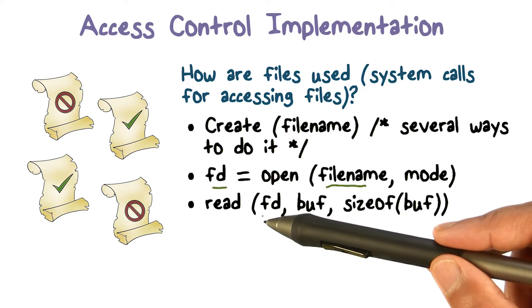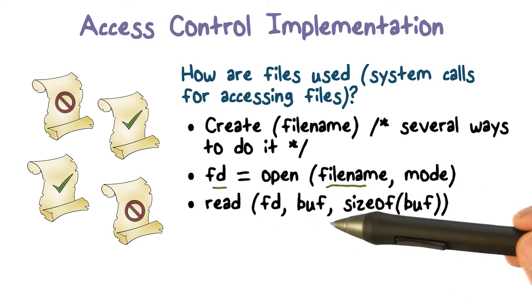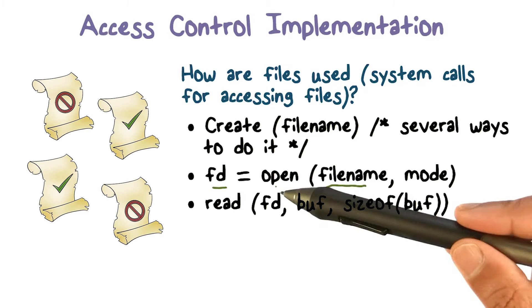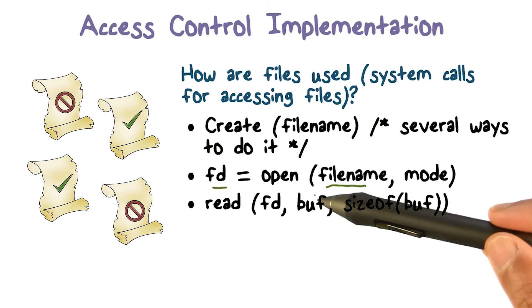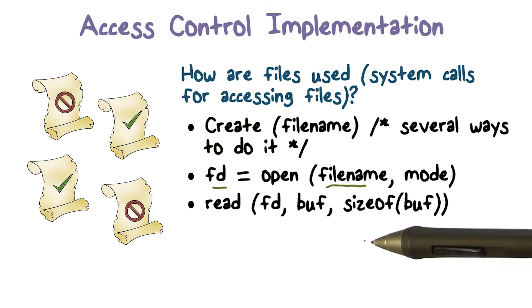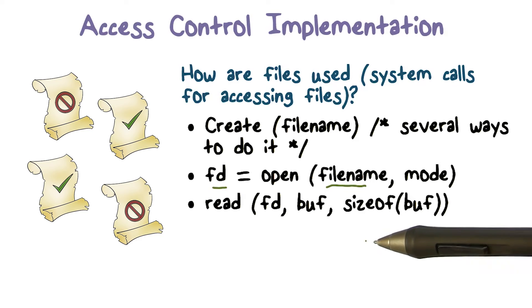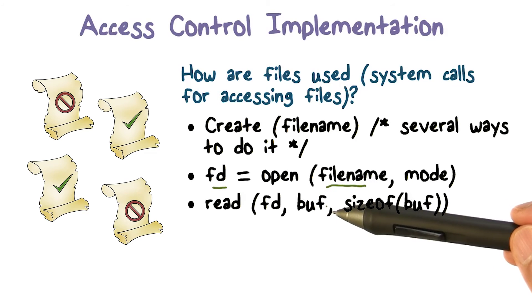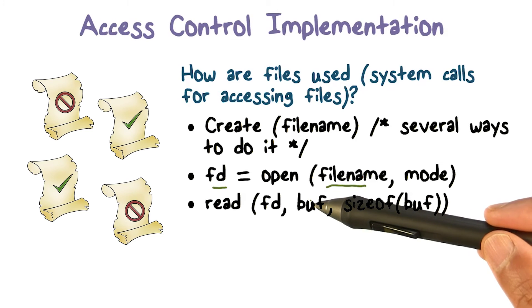If you want to read this file, in the read call — another system call — you specify what file using a descriptor, which is a small number, for example five. If you're reading, you have to specify where the read data should be put and how much data you are reading — that's the buffer and its size. Data is going to come from the file via a file pointer that points at the next place from which data is going to come, and it's advanced as you read. Whatever data follows the current file pointer gets pulled and placed into the buffer — that's what the read call does.